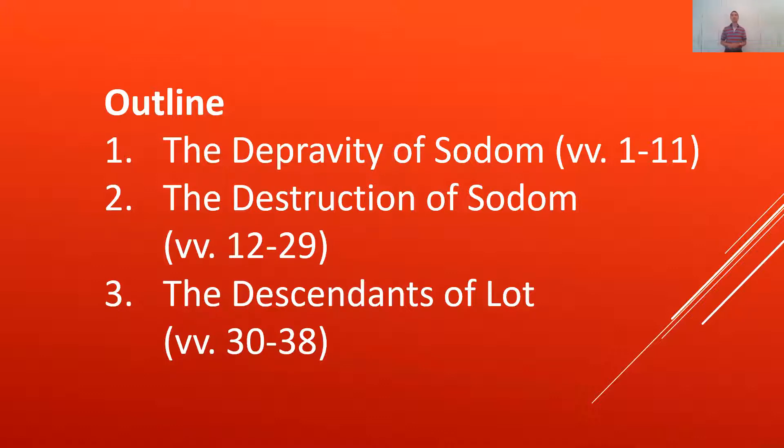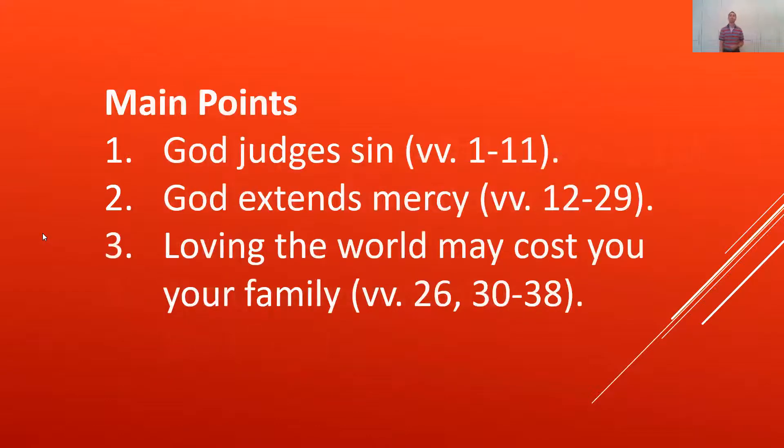I'd like to begin by offering you an outline of this passage. The chapter has 38 verses, and the first 11 of them have to do with the depravity of Sodom, that means the sinfulness of Sodom, verses 1 through 11. Second, we're going to look at the destruction of Sodom, and what was going on just prior to it and just after it. Verses 12 through 29 record for us the destruction of Sodom. And then number three, the descendants of Lot. What became of Lot? What became of his children? That's verses 30 through 38.